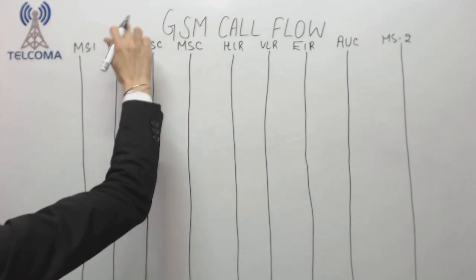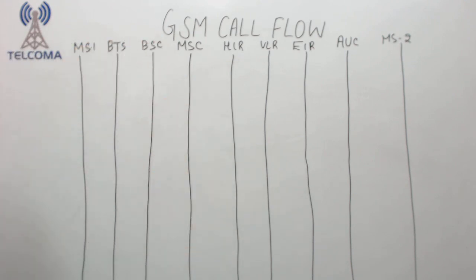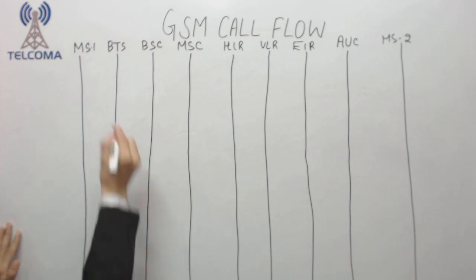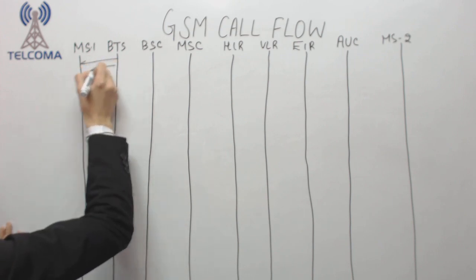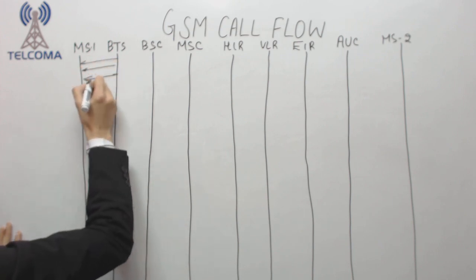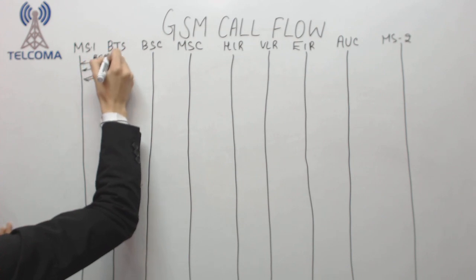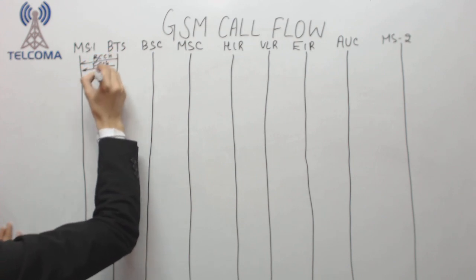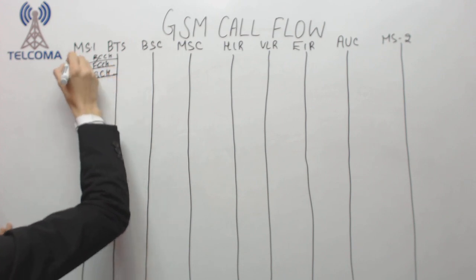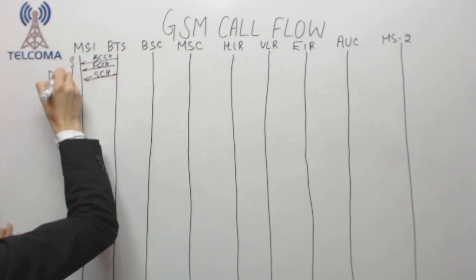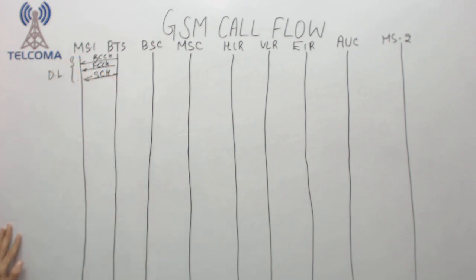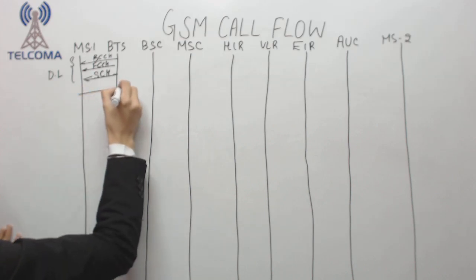This mobile station is under this BTS and BSC. We are assuming these are under the same MSC, BSC, and BTS. They have to call one another. From BTS, mobile station is getting broadcast channels - BCCH, FCCH, and SCH. Now we want to call, which means we want to access the network, so we have this RAT channel.